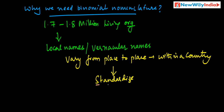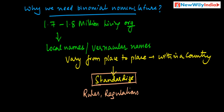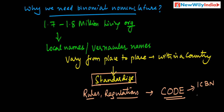That standardization comes with some rules and regulations — there is a code. There are codes like ICBN, International Code of Botanical Nomenclature, and International Code of Zoological Nomenclature. In the previous video I explained what all these things are. If you have not watched that video, please watch it.